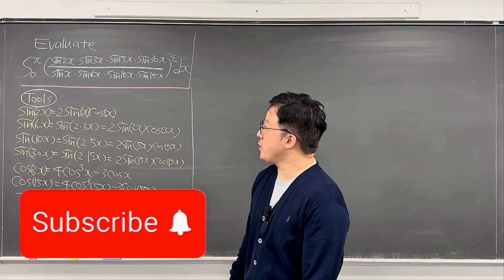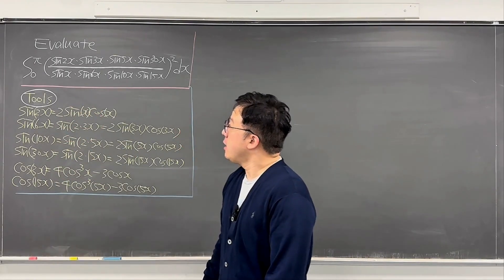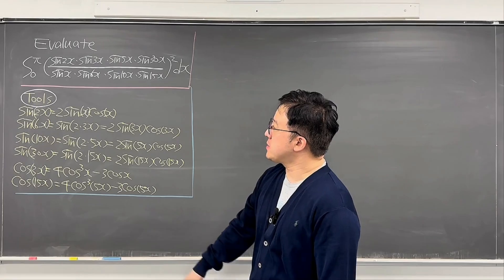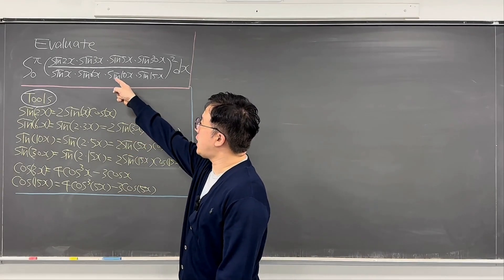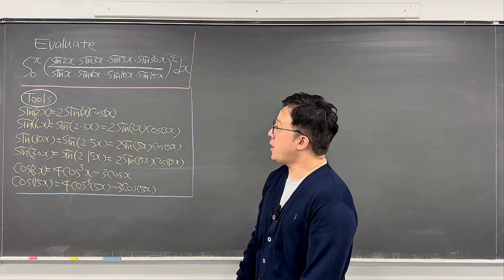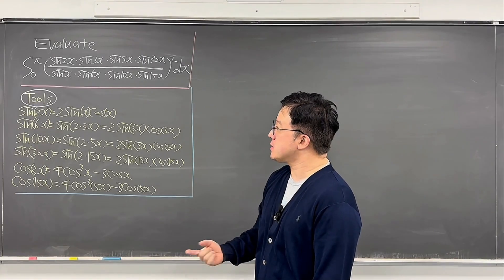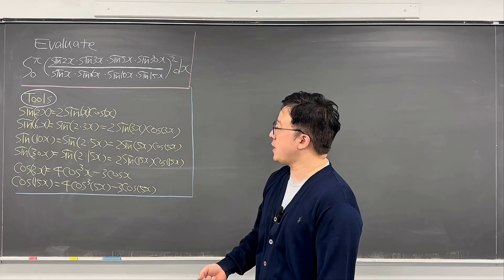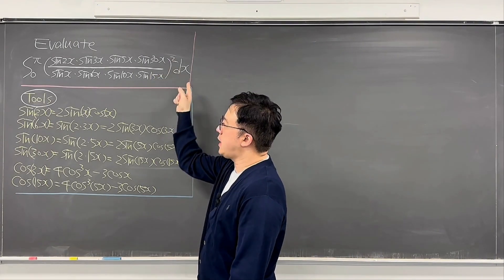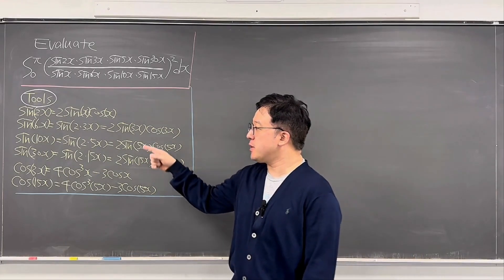Here's the question: evaluate the integral from zero to pi of sine(2x) times sine(3x) times sine(5x) times sine(30x), divided by sine(x) times sine(6x) times sine(10x) times sine(15x), all squared, dx.